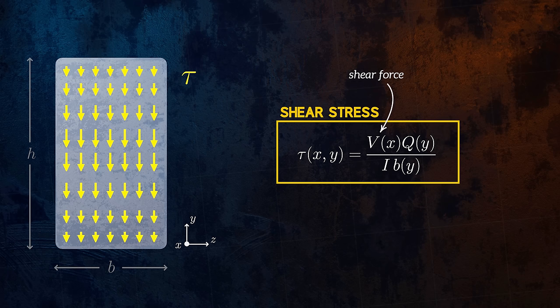Another assumption this equation makes is that the shear stresses are aligned with the y axis. Shear stresses act tangentially at a free surface, so for a circular cross section we can't strictly use this equation to get the distribution of shear stresses across the height. But we can still use it to estimate the shear stresses at the neutral axis, because the shear stresses there are aligned with the y axis. The equation for shear stress at the neutral axis in a circular cross section is similar to a rectangular section: the average shear stress V over A multiplied by a constant, which is 4/3 for a circular cross section and 3/2 for a rectangular one.